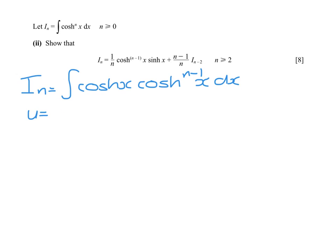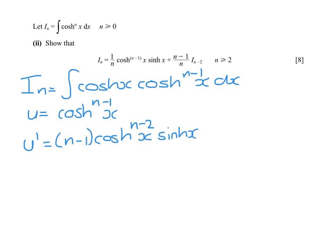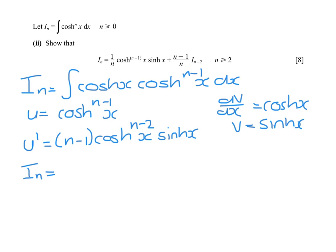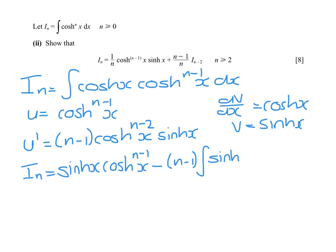We let u equal cosh to the n minus 1. When we differentiate that, we get n minus 1 times cosh to the n minus 2 times its differential, which is sinh. And if we let dv/dx equal cosh, then v must be sinh. Using our integration by parts formula, I_n equals u times v, so that is sinh times cosh to the n minus 1, minus the integral of u-dash times v, which gives us sinh squared x times cosh to the n minus 2.